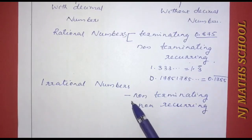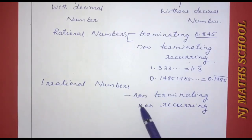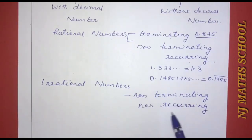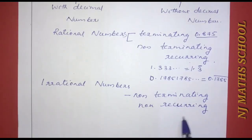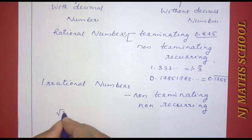Irrational numbers have a decimal expansion that is non-terminating and non-recurring — the digits never terminate and never repeat.